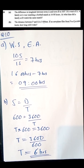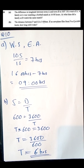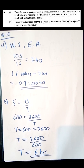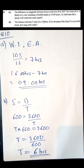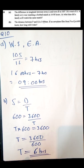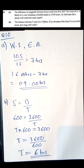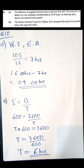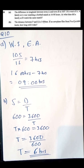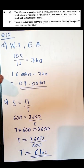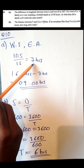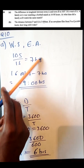The difference in longitude between town A and town B is 105 degrees, and B is west of A. A family at A was watching a football match at 16 hours. To convert the difference in longitude into time, divide by 15. So 105 ÷ 15 = 7 hours, which is the time difference between town A and town B.